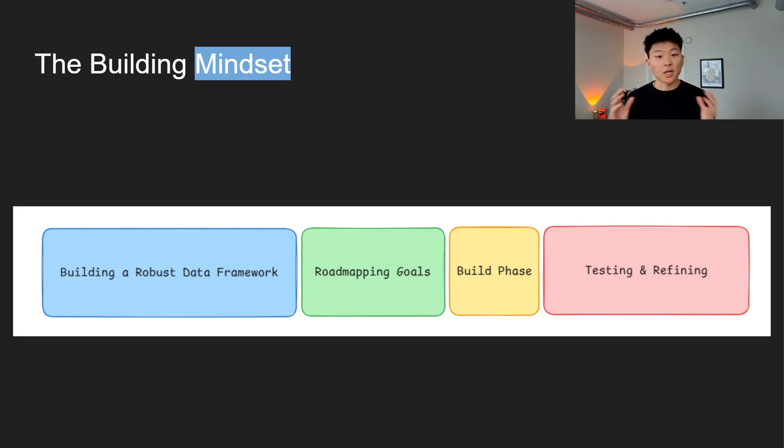So step one is building a robust data framework. It's going to be a big chunk of the process, getting all your information into a database like a vector database in a way that's clean, organized, and optimized for the agent to use efficiently. This is the foundation. If the agent doesn't have access to accurate, well-structured data, like we talked about, it's not going to perform well.